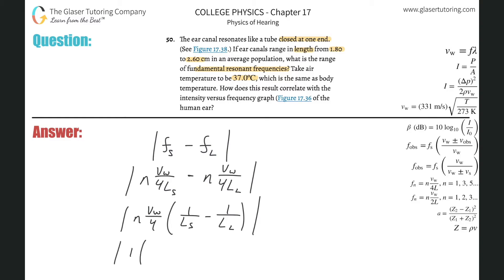They say the fundamental resonant frequency, so that n is one. The speed of sound - they told us the temperature is 37. We got to do a conversion, so we have that formula that is 331 multiplied by the square root of the Kelvin temperature divided by 273. The Kelvin temperature: they told me Celsius, so I just got to do that conversion, 273 plus 37.